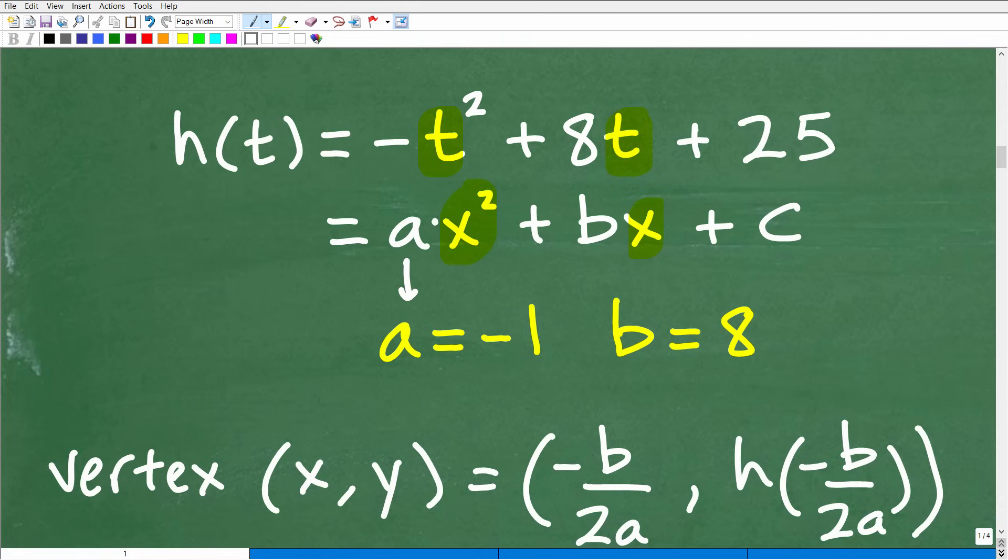It's the same kind of setup here. So a is going to be equal to negative one. That's the coefficient in front of the squared term. In this case, it's t squared, so there's a negative one right here. So a is negative one. And b is the number in front of that linear term, in this case t. So b is equal to eight.